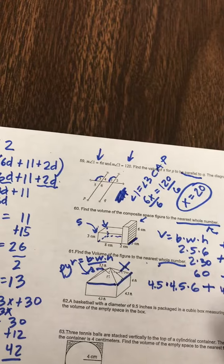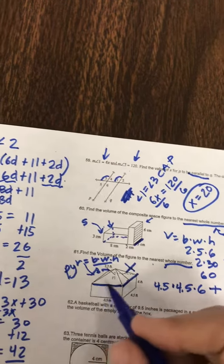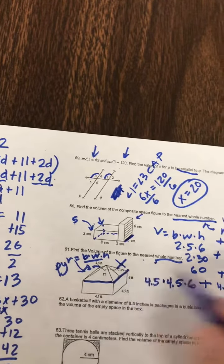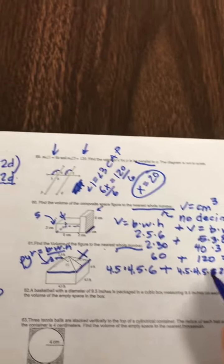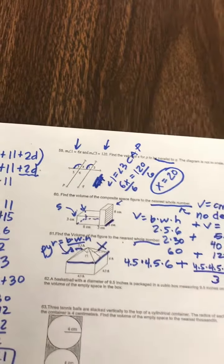So we have 4 and a half times 4 and a half times 6 base times width times height. Or, oh, where did that 6 come from? Oh, I made that up. 4 and a half by 4 and a half by 2 and a half divide by 3. Okay.